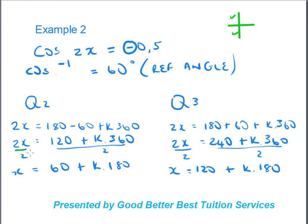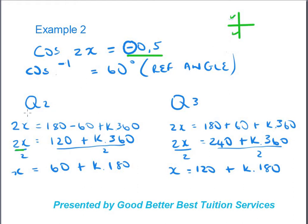We have 2x, so we need to solve for x by dividing both sides by 2. That gives 120÷2 = 60 and 360÷2 = 180, so x = 60° + k×180°. For quadrant three: 180° + 60° = 240°, divide by 2 on both sides, giving x = 120° + k×180°. We choose quadrant two and three because the value −0.5 is negative, and cosine is negative in those quadrants.